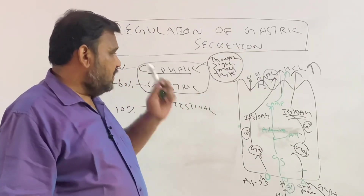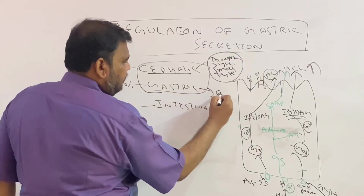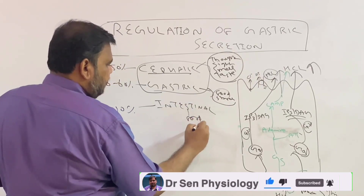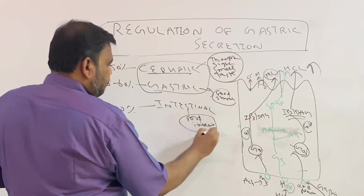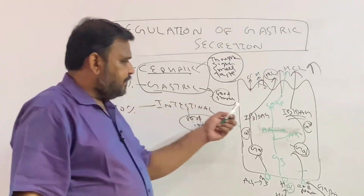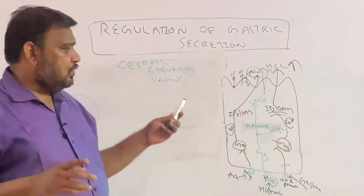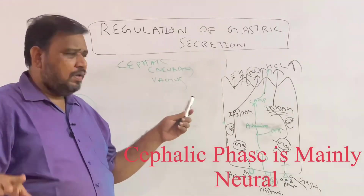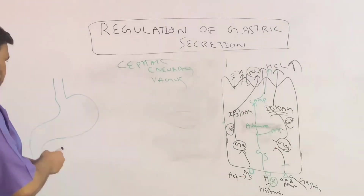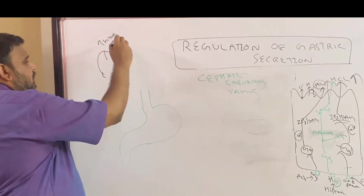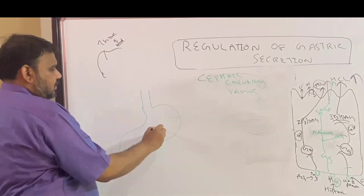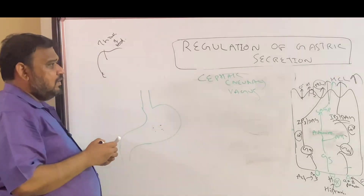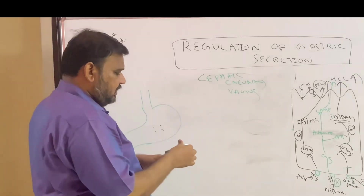The cephalic phase is purely neural, mediated by the vagus nerve. When we think of food, the vagus nerve is stimulated, which causes gastric secretion in the stomach. In the gastric phase, food has entered the stomach. In the intestinal phase, food has moved into the intestine.